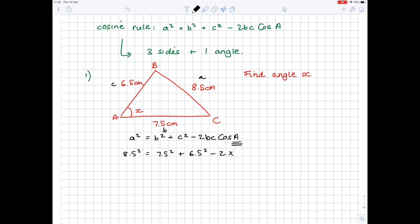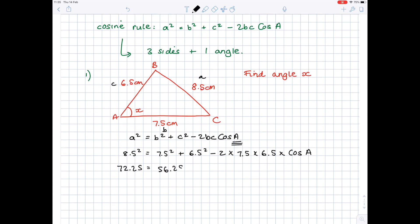Now you need to simplify it. Let's start by doing 8.5 squared, and you get 72.25. 7.5 squared is 56.25. 6.5 squared is 42.25. Then we're going to multiply minus 2 by 7.5 by 6.5 to get minus 97.5 times by cos A.